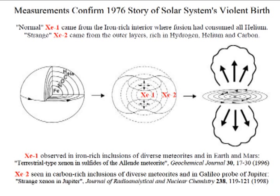Dozens of measurements since 1976 confirmed that first, normal XE1 came from the central metal-rich region of the supernova debris. Second, strange XE2 came from the outer helium-rich region.